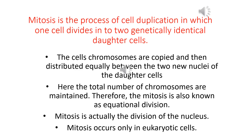Mitosis is actually the division of the nucleus. It occurs only in eukaryotic cells. The process involves cell duplication in which one cell divides into two genetically identical daughter cells and the total number of chromosomes are maintained. Mitosis is also known as the equational division because even though the chromosomes are copied, the total numbers are maintained. It occurs only in eukaryotic cells.